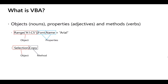Another example is Selection — an object representing whatever you've currently selected on the worksheet, whether a chart or a cell. Actions you can take on a selection include copying, cutting, pasting, changing values, or creating a new sheet. These are all different actions we might use in VBA.